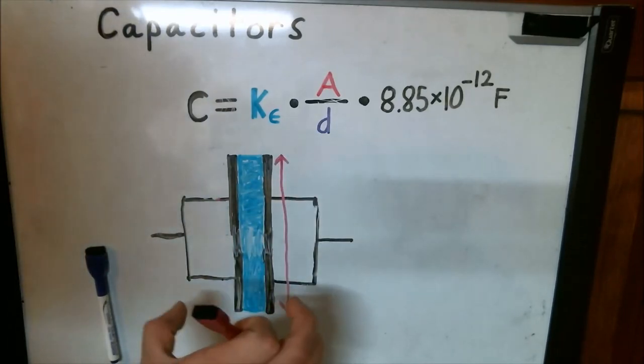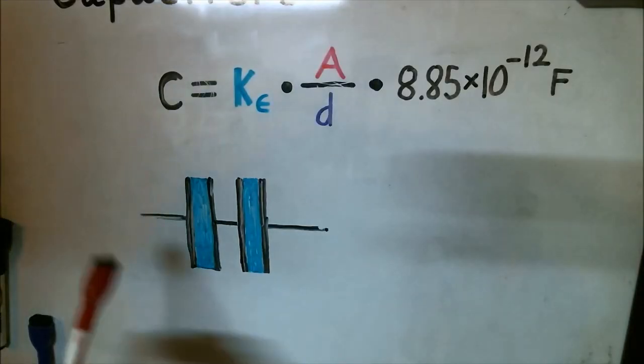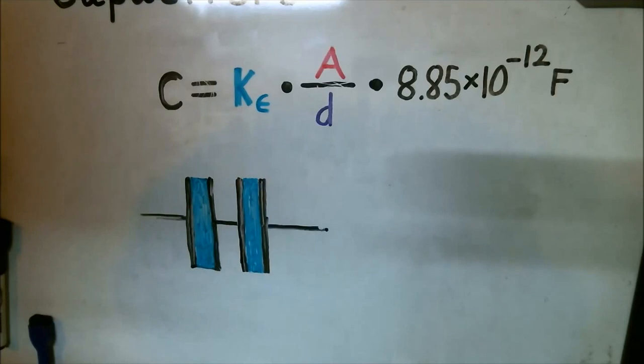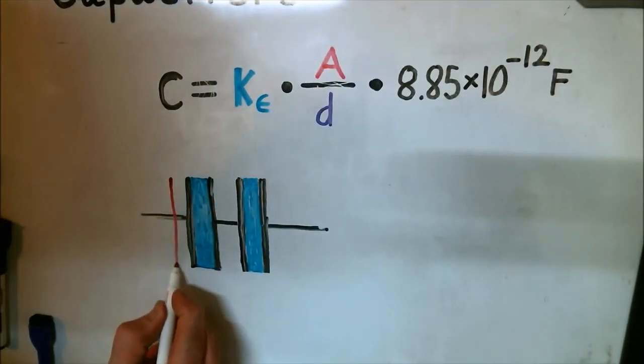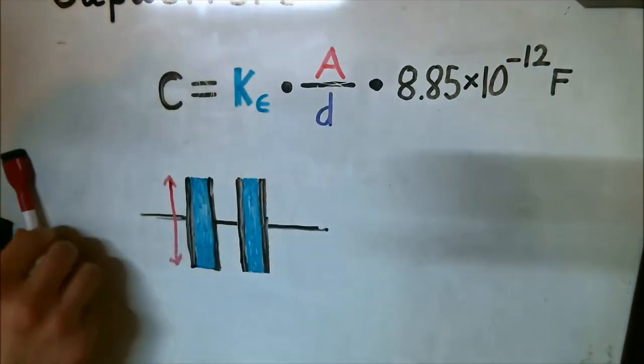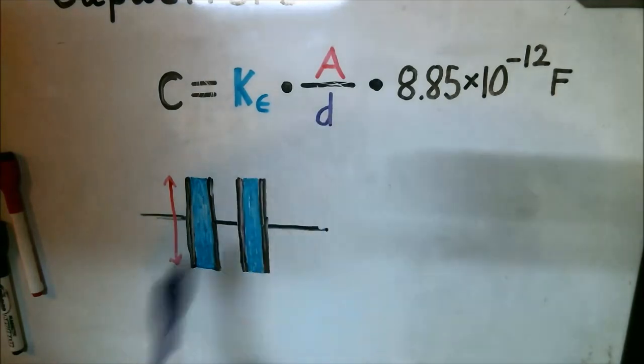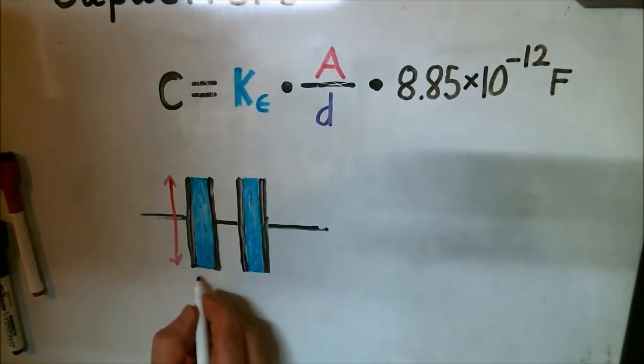Now let's take a look at two capacitors in series. Alright, now we have two capacitors in series. Now the area didn't change. We still have the same amount of surface area. But what did change is the distance. Now we have two of these, as opposed to just one.